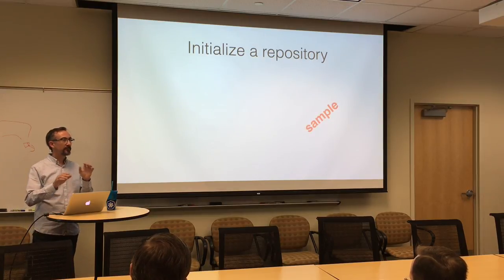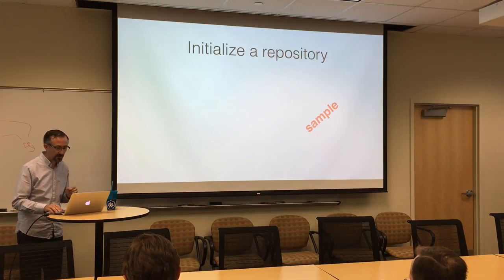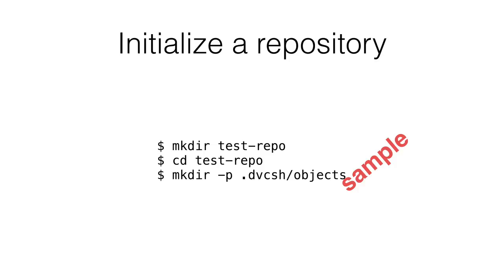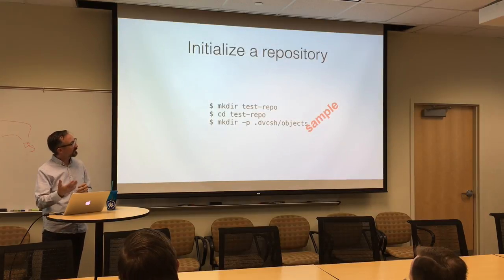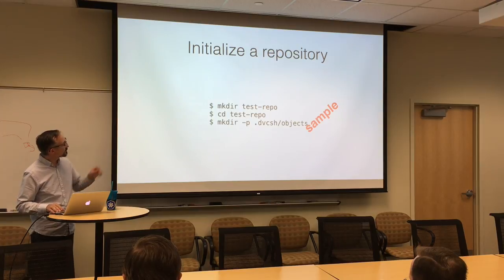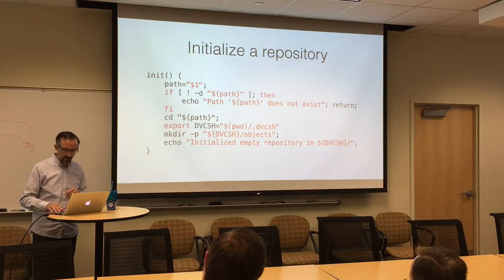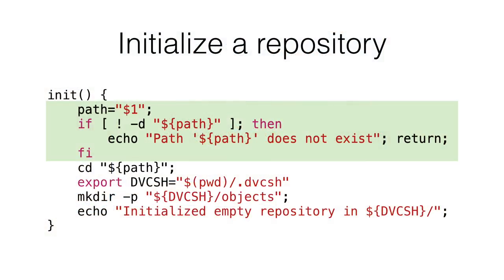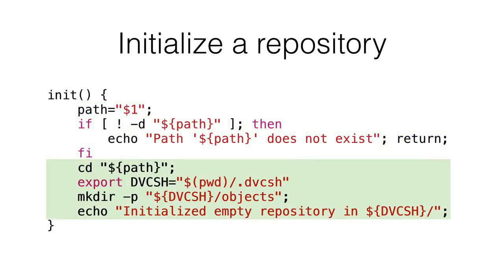If we were to begin writing our own version control system using the Bourne shell today, we might do something like this. Here's our test repo — this is where our source code will live. We're going to cd into it and start hacking away. But before we do that, we're going to initialize our repository by creating a .dvc directory, and inside of that, an objects directory. This is basically how Git operates. We're going to write a shell function to do that for us. The function accepts a path name; if the path doesn't exist as a directory, it prints a friendly message and returns. Otherwise, it changes directory into that path, exports a shell variable, and makes the objects directory.